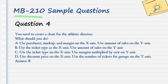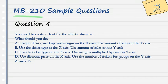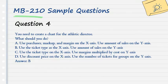Question 4. You need to create a chart for the athletic director. What should you do? A. Use purchaser, markup, and margin on the x-axis; use amount of sales on the y-axis. B. Use the ticket type as the x-axis; use amount of sales on the y-axis. C. Use the ticket type on the x-axis; use margins multiplied by cost on the y-axis. D. Use discount price on the x-axis; use the number of tickets for groups on the y-axis. Answer: B.